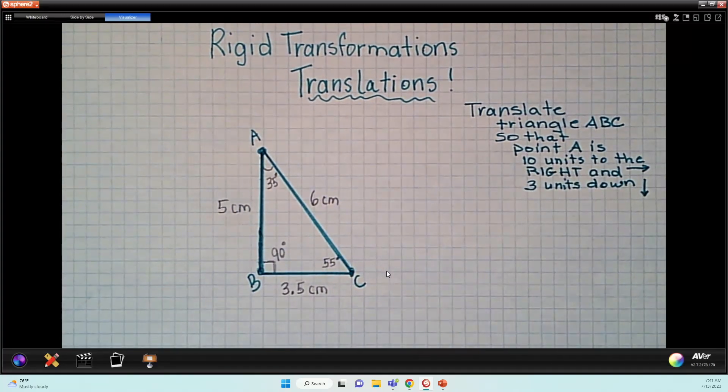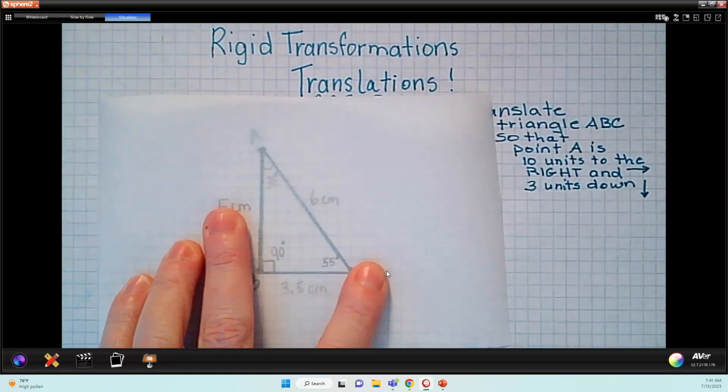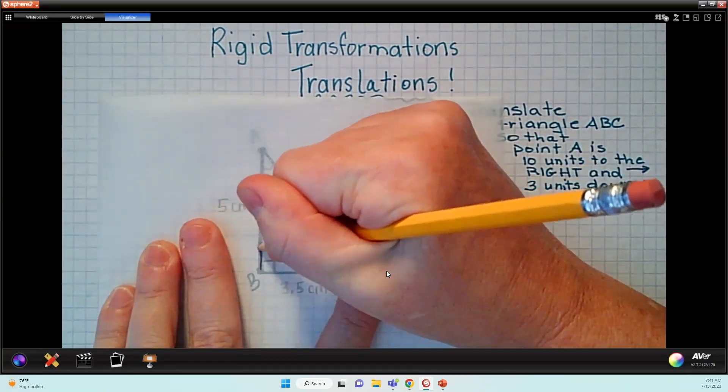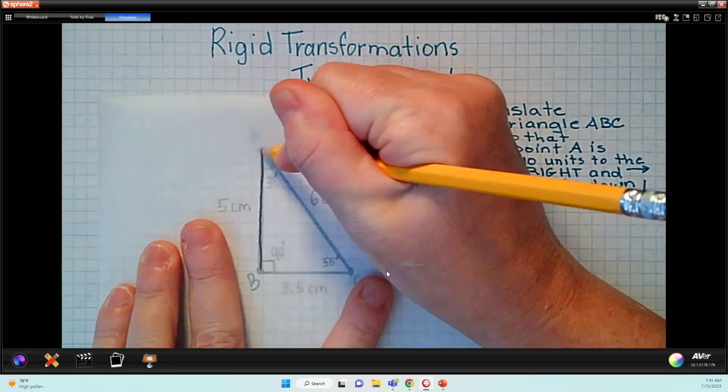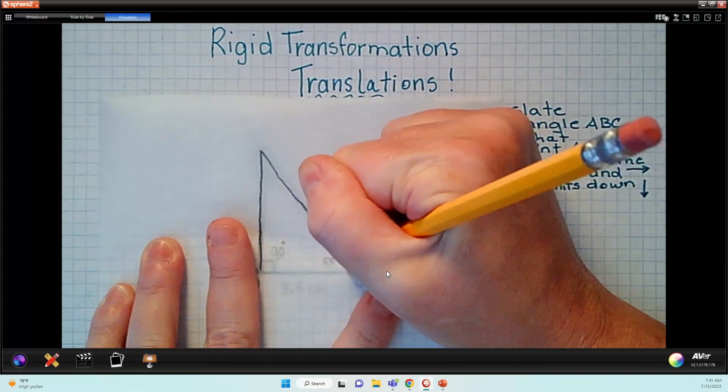One strategy that we show them in class is to use tracing paper. We can show the students that they can trace this. So we'll have them take a pencil and just do a little rough trace of the shape, trying their best to keep it as close as possible to the original.